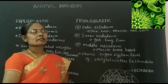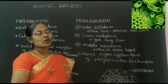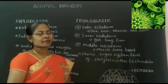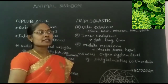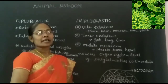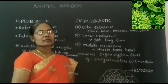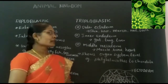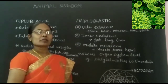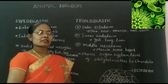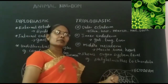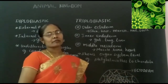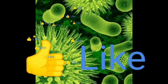These animals show organ system level of organization. Organ system means digestive system, circulatory system, and all those organ systems. Examples of Triploblastic animals range from Platyhelminthes to Chordates. Thank you.